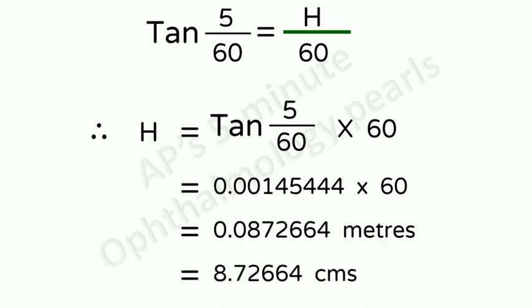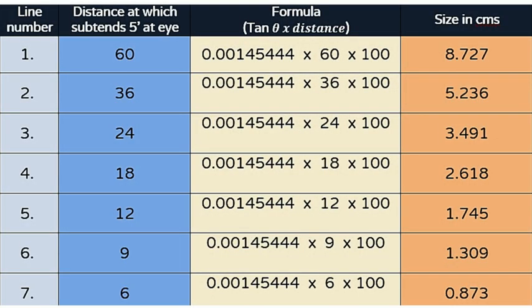Multiply that by 100 to give the size in centimeters. So, to get the actual size of the letter on the chart, multiply 0.00145444 by the corresponding distance. The actual sizes calculated in this way for the other distances are given here.